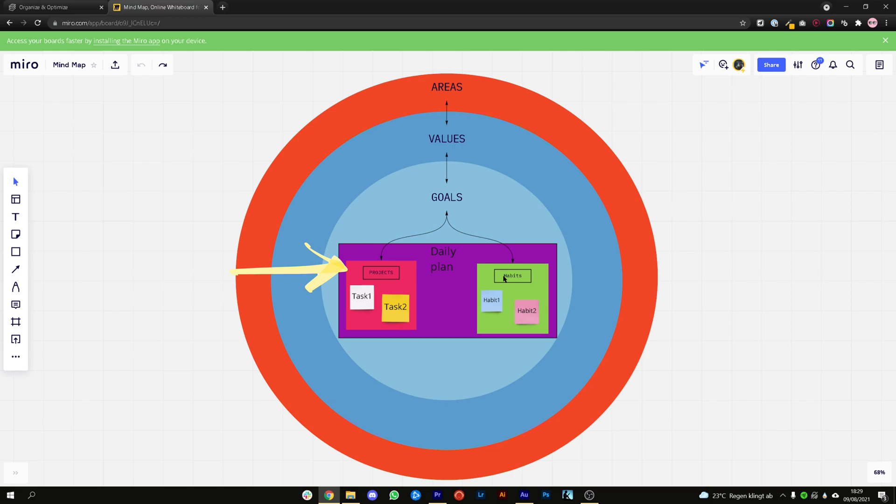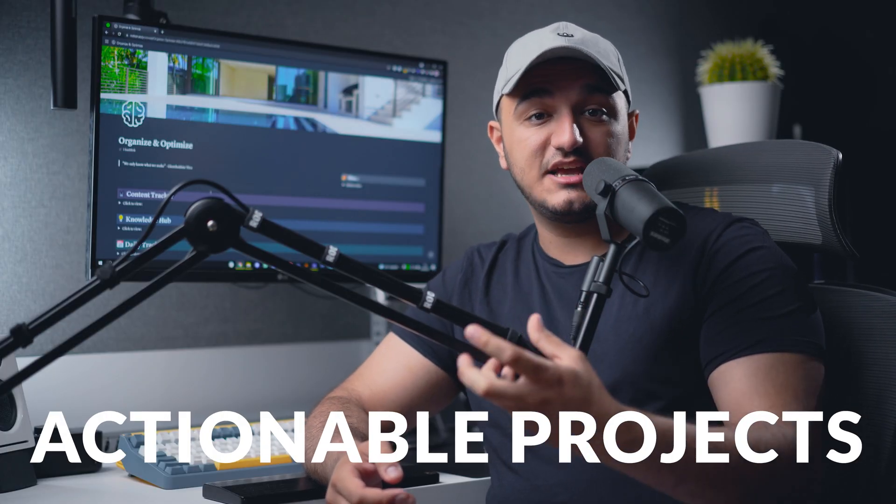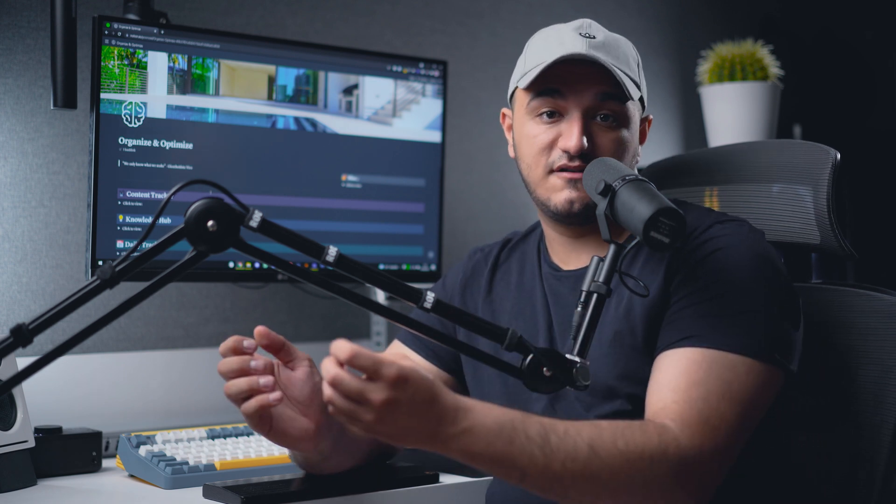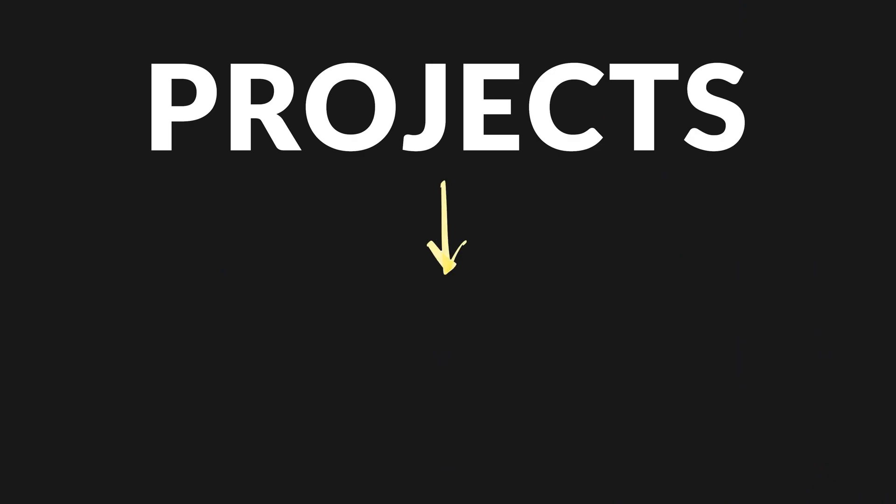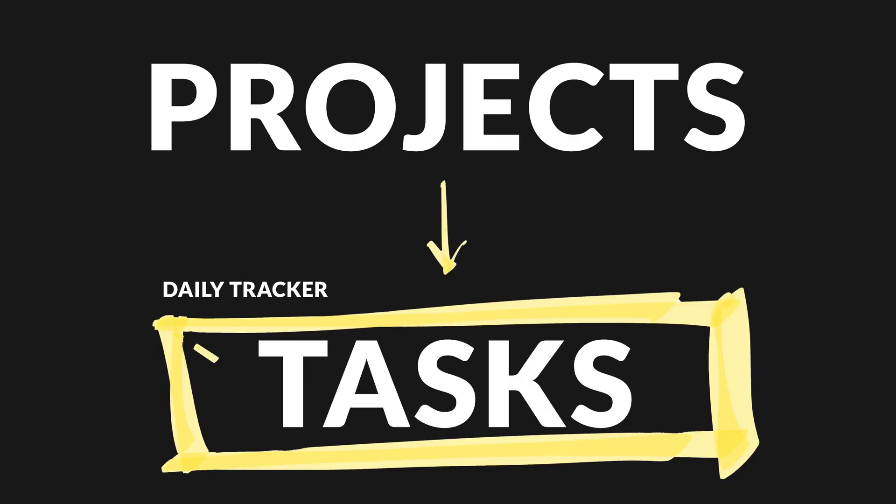In part two we set our goals, and based on those goals now we want to create actionable projects — things that we can really work on to achieve those goals and then fulfill our values. Projects are actually what we are working on, but they are made from a lot of tasks. Projects will tell you what you're going to do in the next quarter, where tasks are going to tell you what you're going to do on Monday, Tuesday, Thursday and so on.